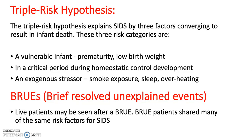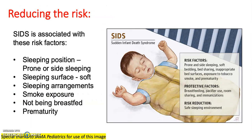Brief Resolved Unexplained Events (BRUEs) are when live patients may be seen after such an event. BRUE patients share many of the same risk factors as SIDS. SIDS is associated with the following risk factors: prone or side sleeping position, soft sleeping surfaces, sleeping arrangements, smoke exposure, not being breastfed, and prematurity. Protective factors against SIDS include breastfeeding, pacifier use, room sharing, and immunisations. Risk can also be reduced by having a safe sleeping environment.